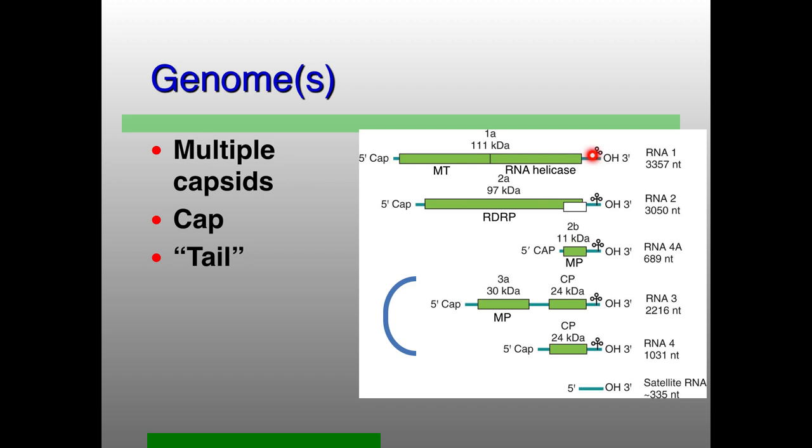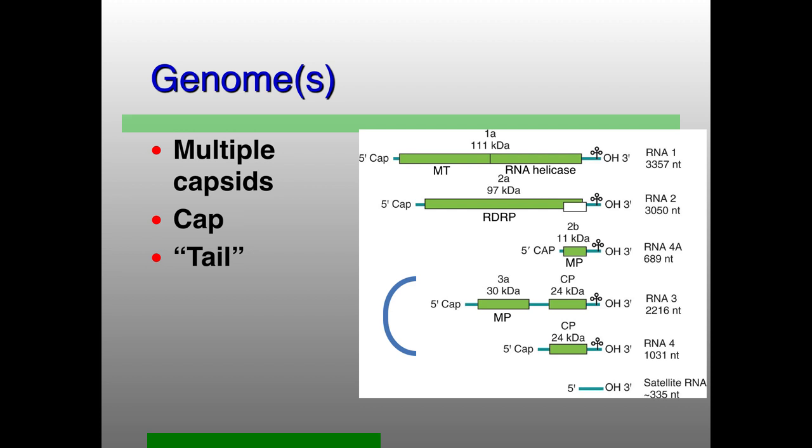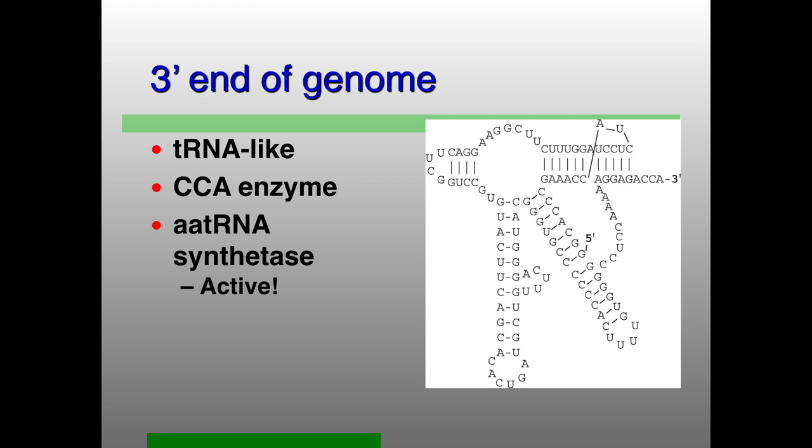The 3-prime end is very different in cucumber mosaic virus and many other plant viruses. It's shown as a cloverleaf structure. It doesn't look like a tRNA, but the cell thinks that it does. Aminoacyl tRNA synthetases will recognize this structure and in many cases actually add an amino acid to the 3-prime end. This helps protect the 3-prime end and may be involved in helping to get the translational machinery to these RNAs, which don't have a standard poly-A tail.